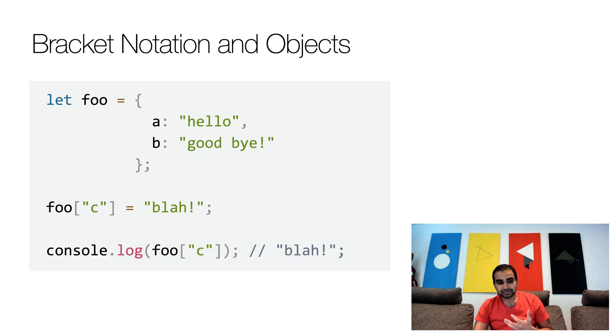Now, this bracket notation, though, is not unique to arrays. If anything, it's more fundamental. It's available as part of objects as well. Here's an example where I have an object called foo. And there are two properties, two keys on it, A and B. And it has the values hello and goodbye. And what I'm doing now is I'm creating a new property on foo called C, and I'm setting its value to blah.